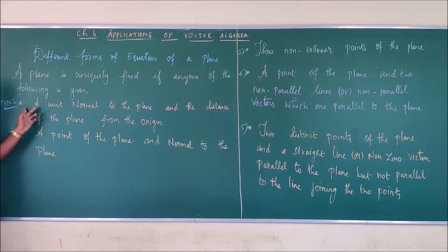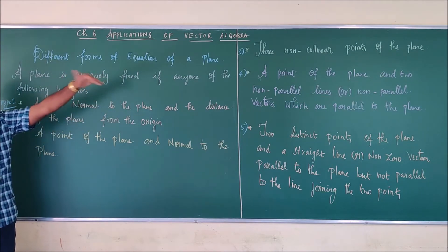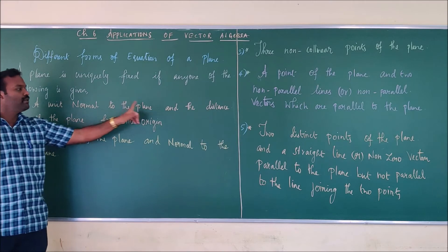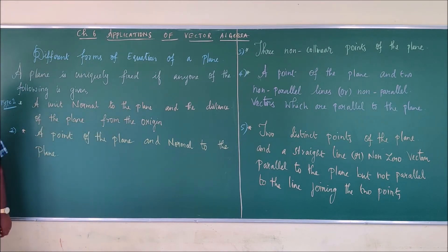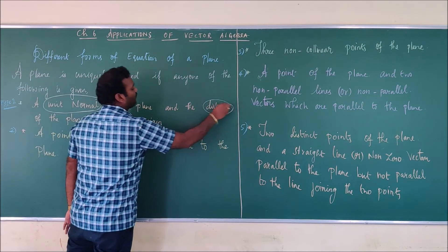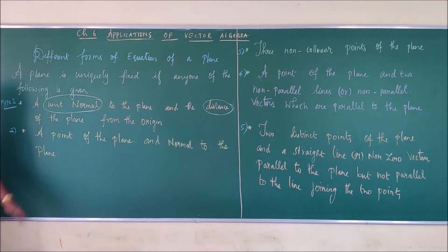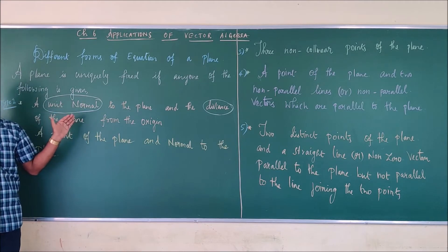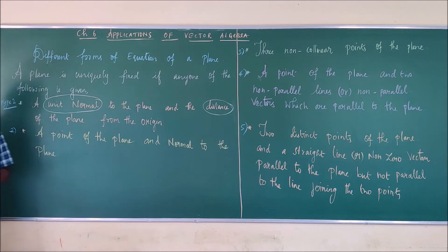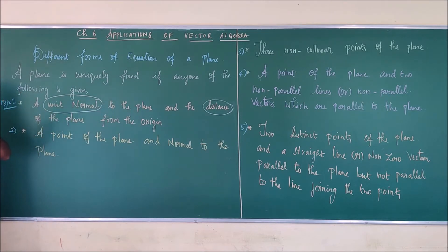First type: if your information is given like this, you have to identify the type and then write the equation for it. Type 1 — a unit normal to the plane and the distance of the plane from the origin is given. That is, two pieces of information: the unit normal vector and the distance from the origin. I am circling the terms which are helpful in identifying the type: unit normal vector and the distance from the origin.